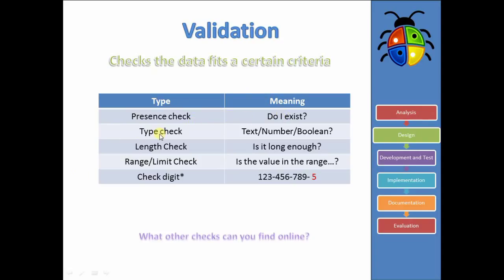Type check is going back to our data types. And so it's looking at is the data type correct. For example, if you ask for a number, but somebody types in A or B or C, then this would not be the correct type. And so it would respond and say, no, you can't have that there. That's not correct.